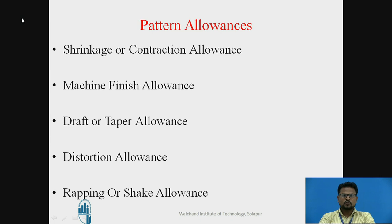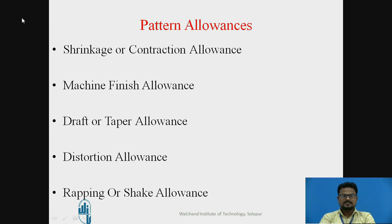The next topic is Pattern Allowances. A pattern is always larger in size compared to the final casting because it carries certain allowances, due to metallurgical and mechanical reasons. The first is Shrinkage Allowance, also called contraction allowance. It is a correction provided on the pattern to compensate for solidification shrinkage and contraction of the casting during cooling to room temperature. Patterns are made larger than the required casting size. The allowance differs from metal to metal, and sometimes double allowances are provided if the pattern is made of wood, since the metal pattern cast also shrinks, which must also be compensated.